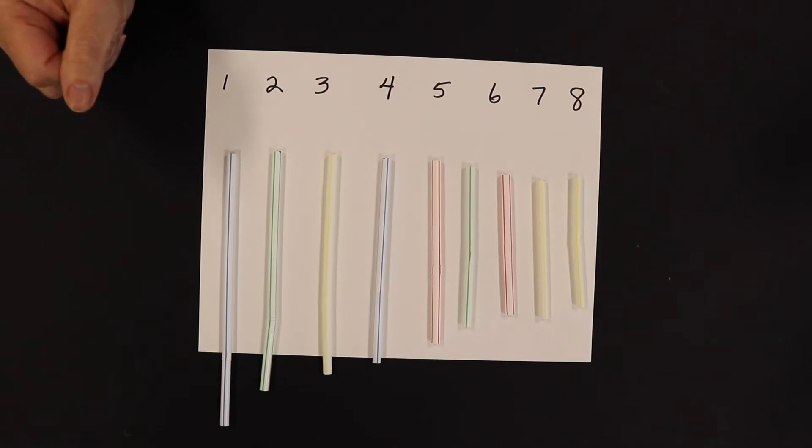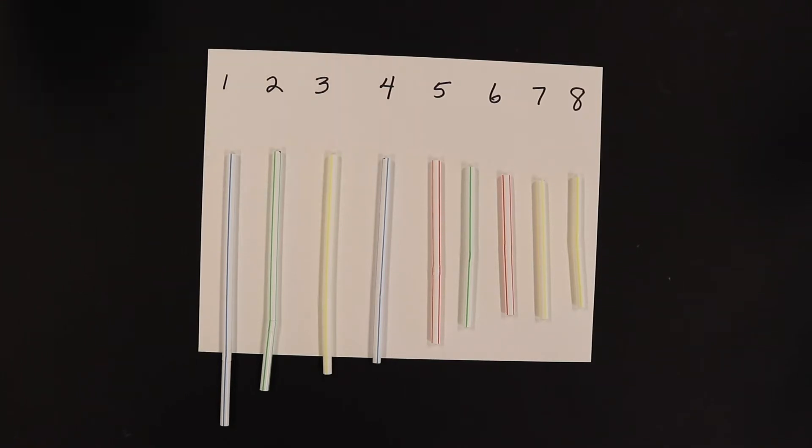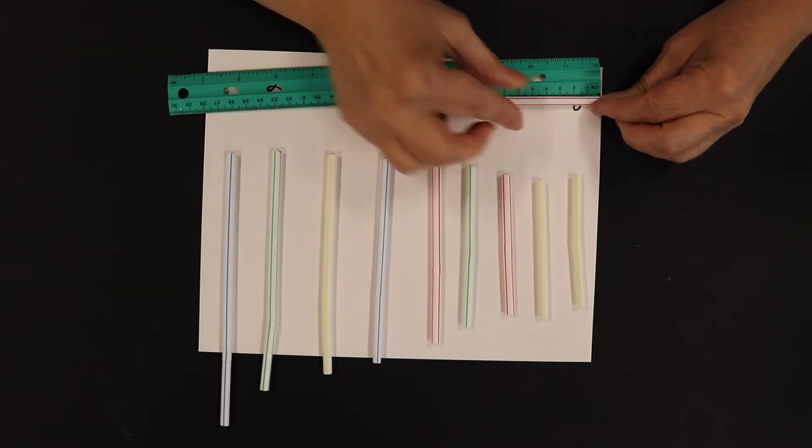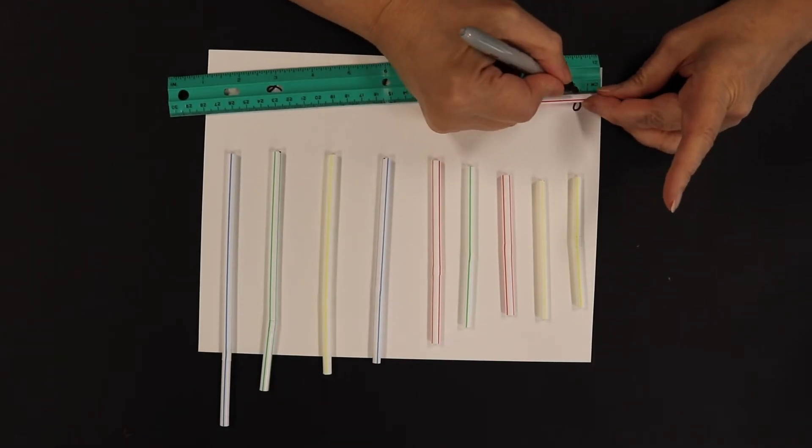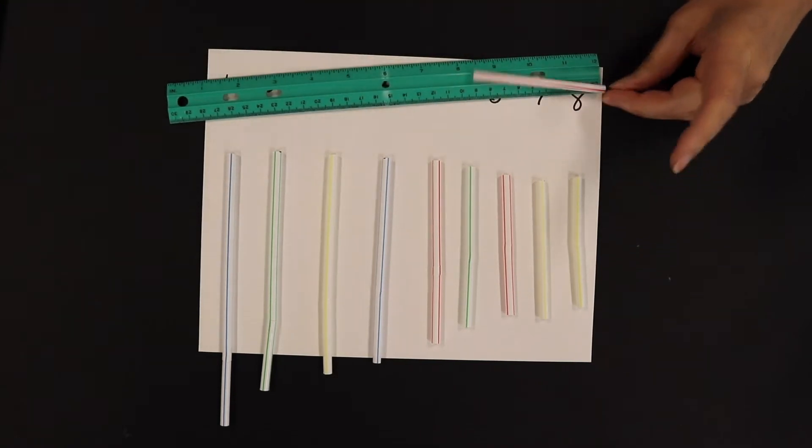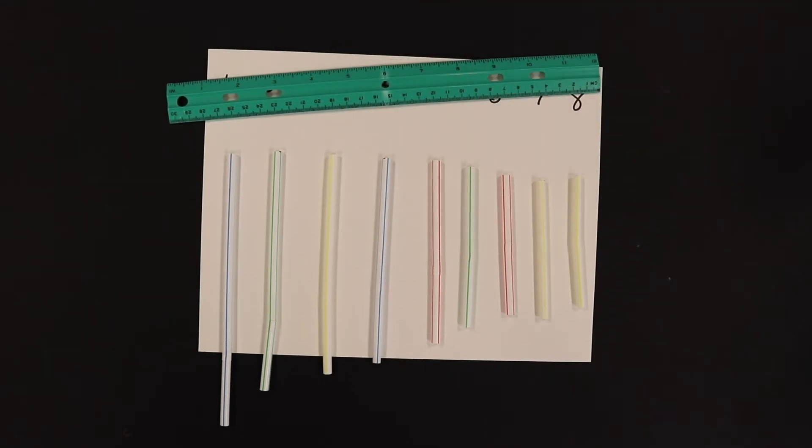As you finish cutting each straw, lay them under the numbers on your paper so they won't get mixed up. For the scraps, cut one straw two centimeters. Here's my scrap. I'm going to measure it two centimeters and cut it. You'll need this later on.